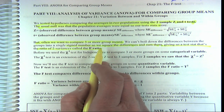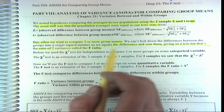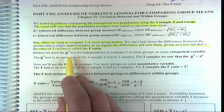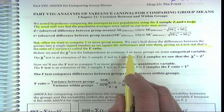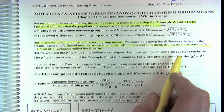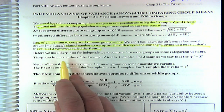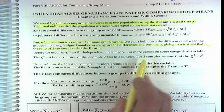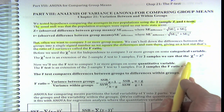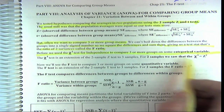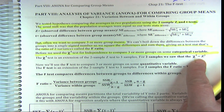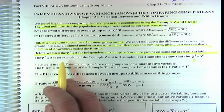We can't reduce the differences to a single number because some are positive and some are negative, so we square the differences and sum them. This gives us a test that's the ratio of two variances called the F ratio. It's very similar to what we did with the chi-squared, which we used to compare three or more groups on some categorical variable.